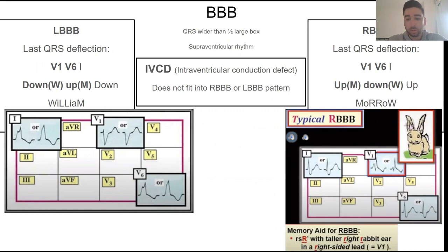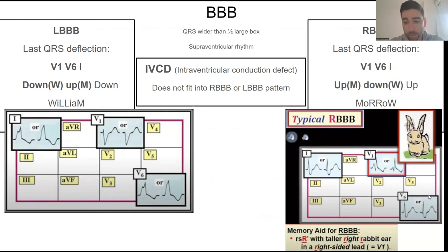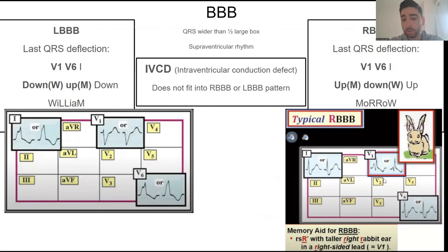For a right bundle branch block, you're going to see a MORO pattern. You look at lead V1 and it's going to look like an M, and V6 is going to look like a W, meaning a positive deflection in V1 that's an M, and a wide terminal negative deflection in V6, which is the W in MORO. Then you check lead one, because lead one and V6 are both towards the left side of the heart, so you should see similar W deflections to confirm a right bundle branch block.